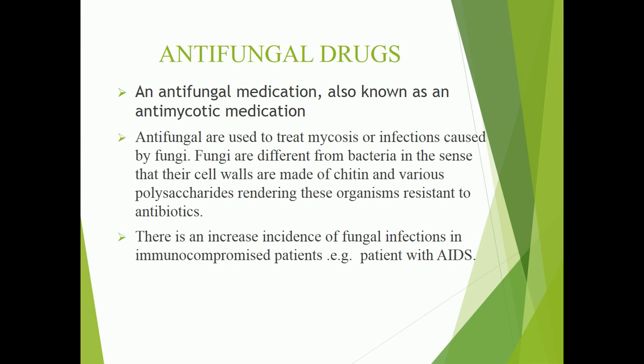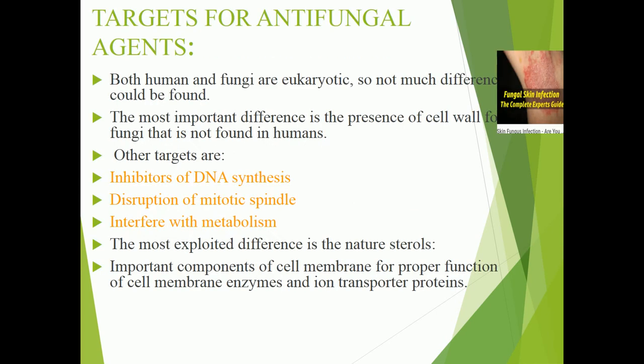There is an increased incidence of fungal infections especially in immunocompromised patients — for example, patients with acquired human immunodeficiency syndrome (AIDS). Whenever a person has a weakened immune system, the chances of fungal infections are more prominent, especially in cases of AIDS or any disease where immunosuppression occurs. The targets for antifungal agents include both human and fungal cells, which are eukaryotic, so there is not much difference — but the most important difference is the presence of cell walls in bacteria and fungi, which are not found in humans.